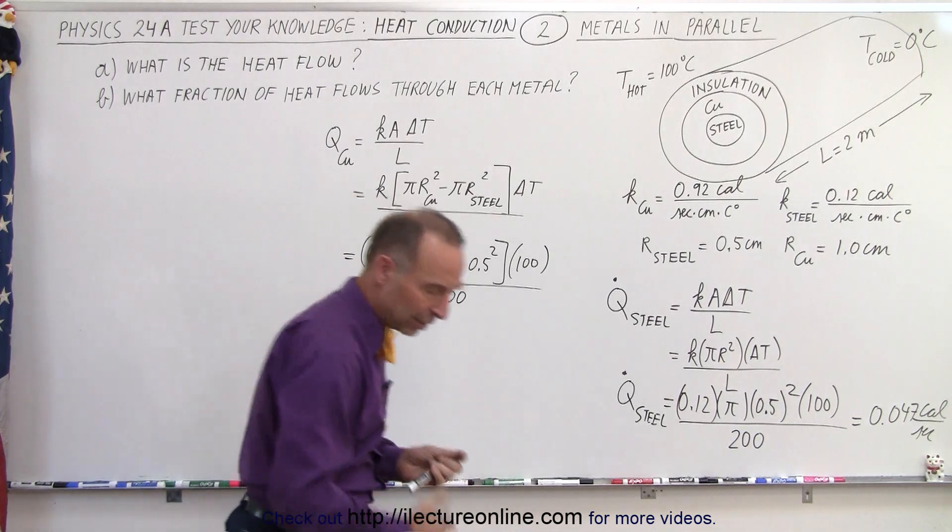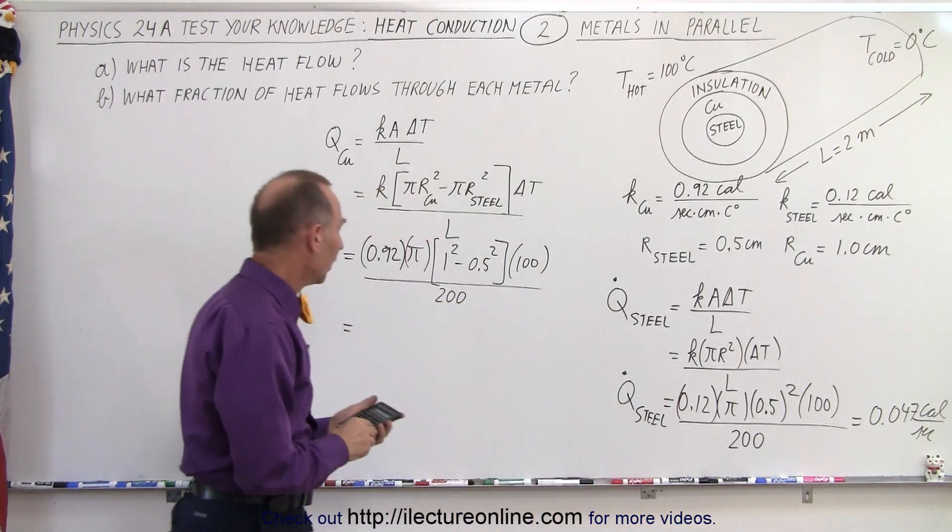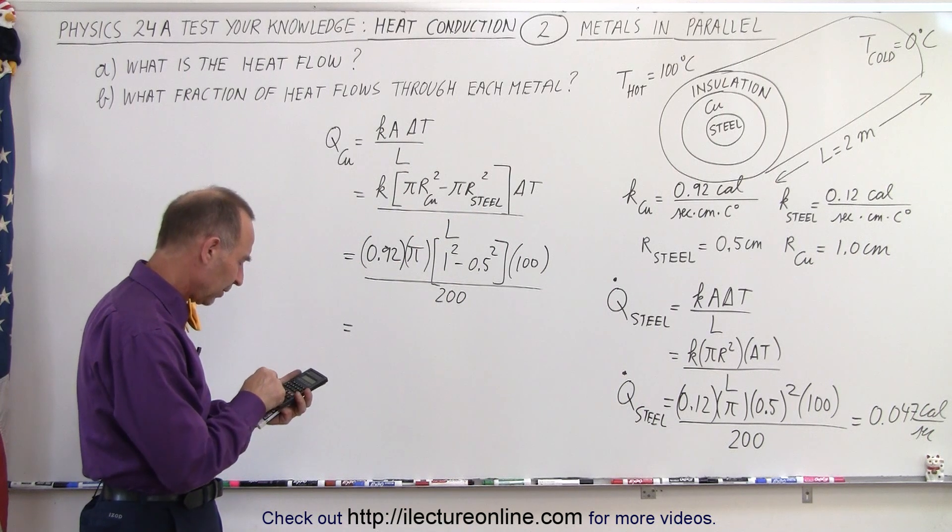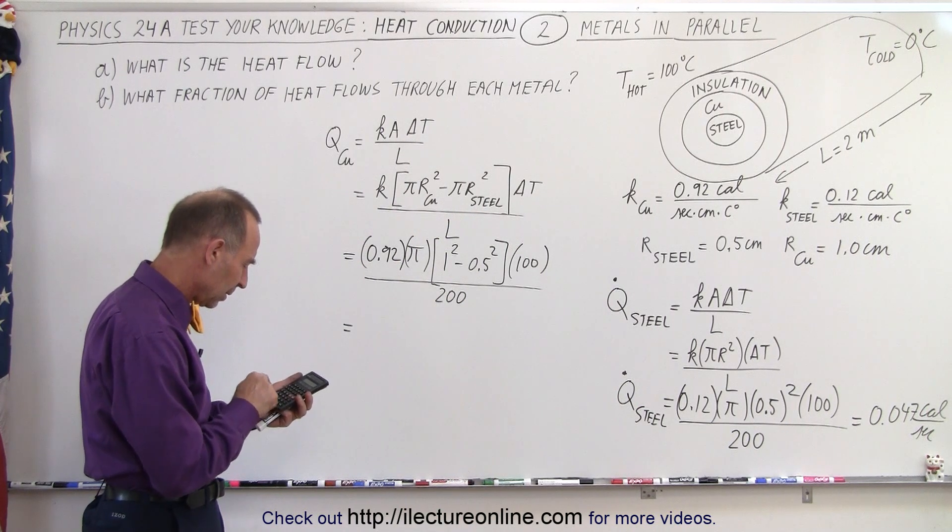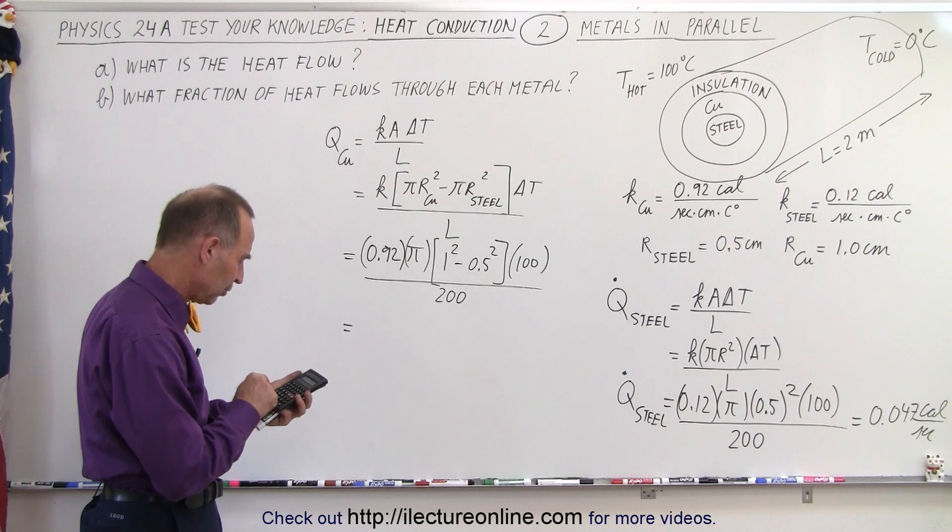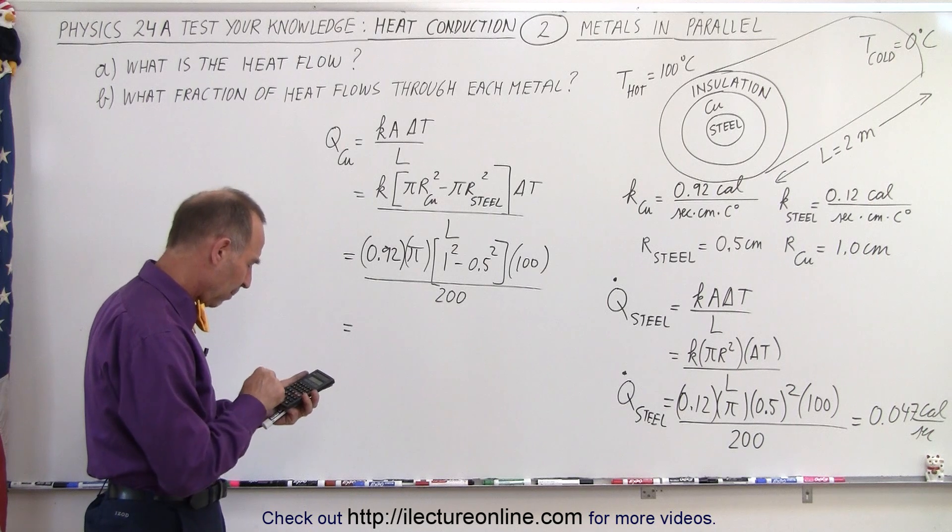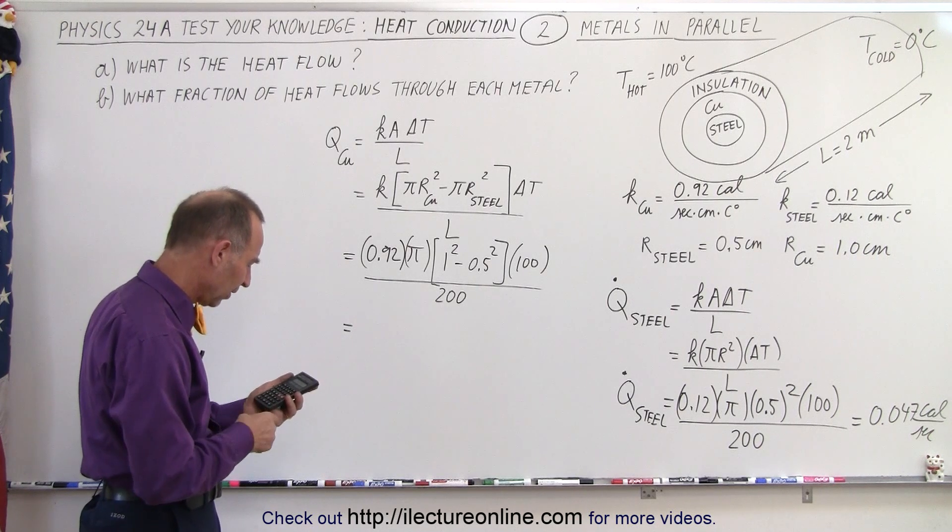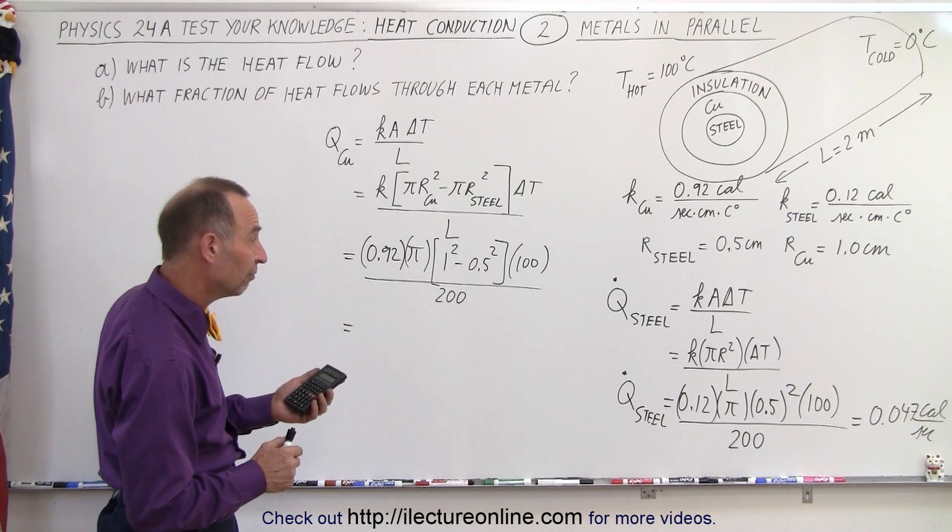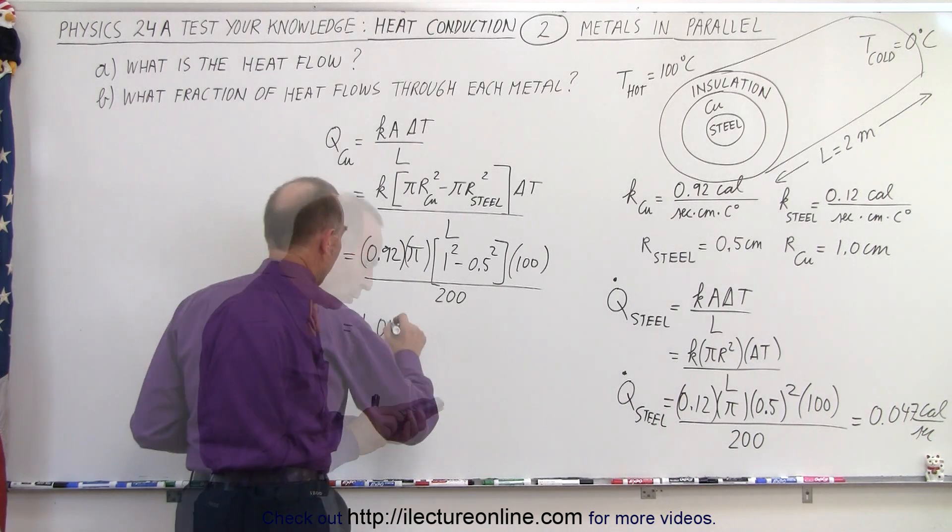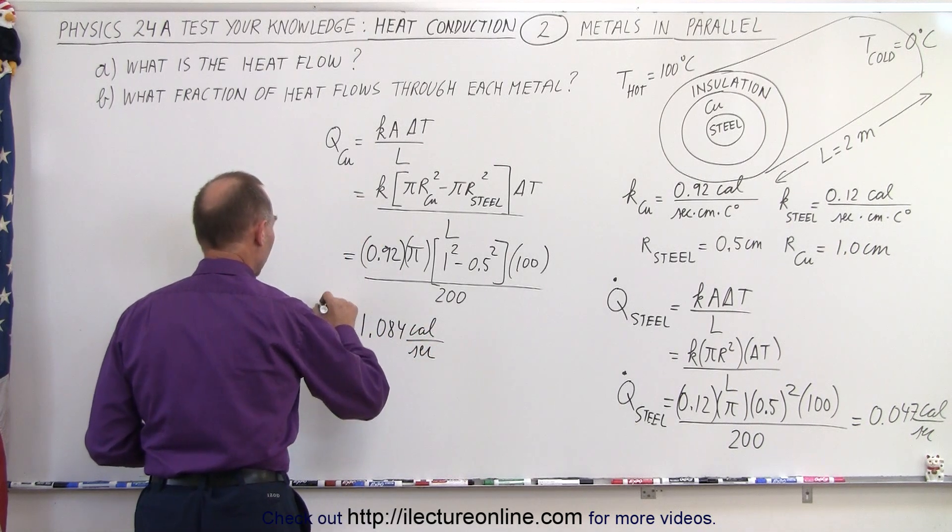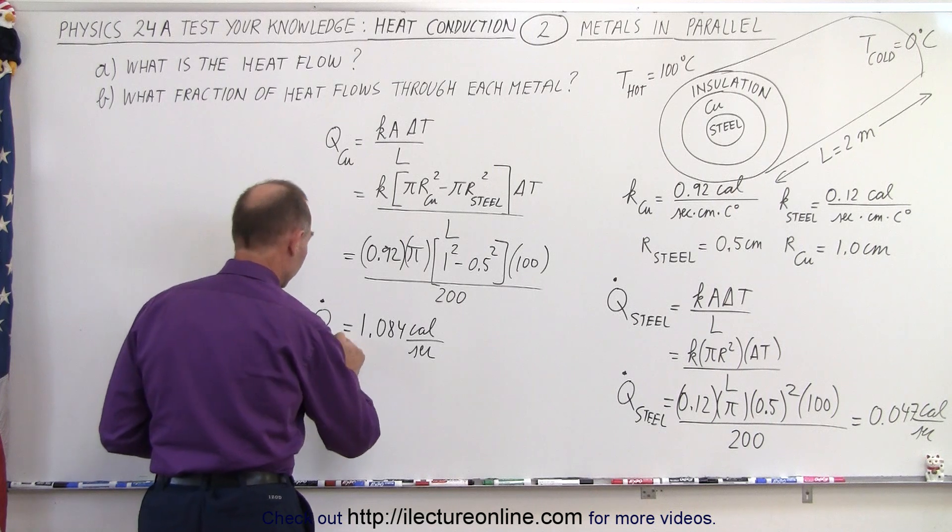And let's see what we get over here. So 1 minus 0.5 squared, that would be 0.5 squared subtracted from 1, and that's 0.75 times 100 divided by 200 times pi and times 0.92 equals we get 1.084 calories per second, and that is the q dot, the dq dt of the copper.